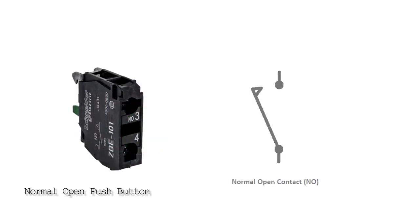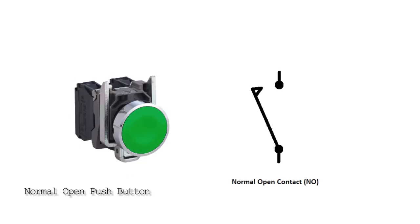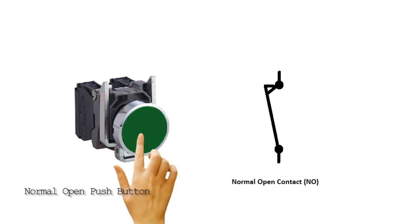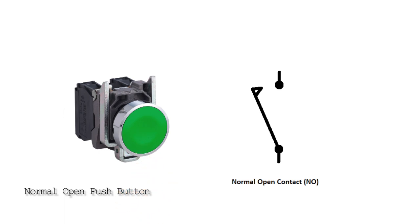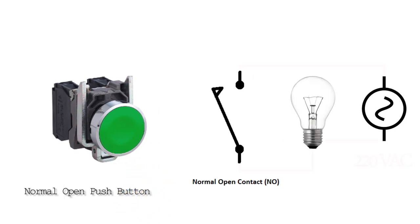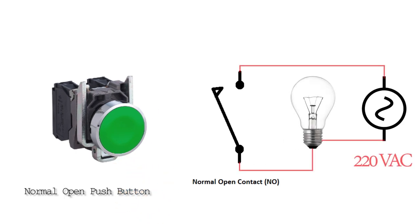First, we have to understand how a normally open push button works. A normally open push button has normally open contacts. If we press the normally open push button, its NO contact closes, and if we release the push button, its NO contact opens again.